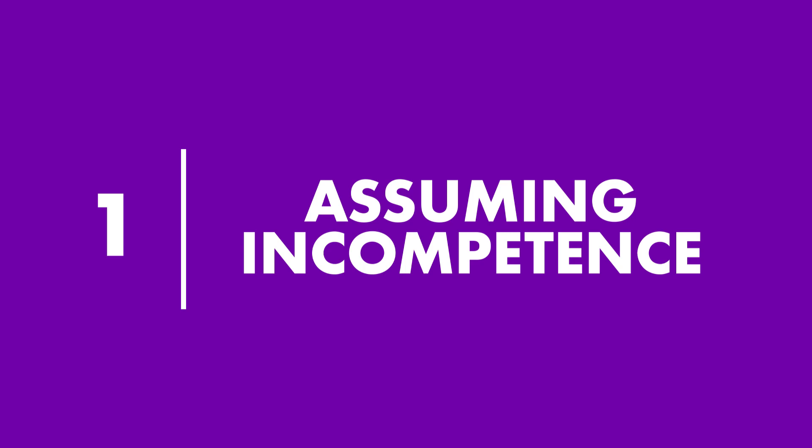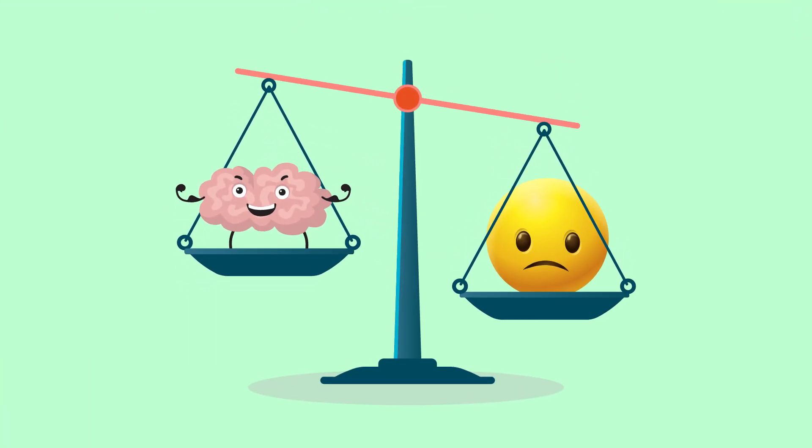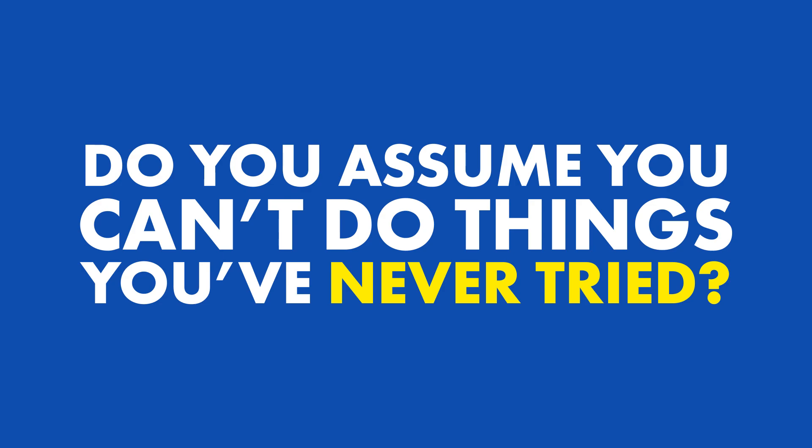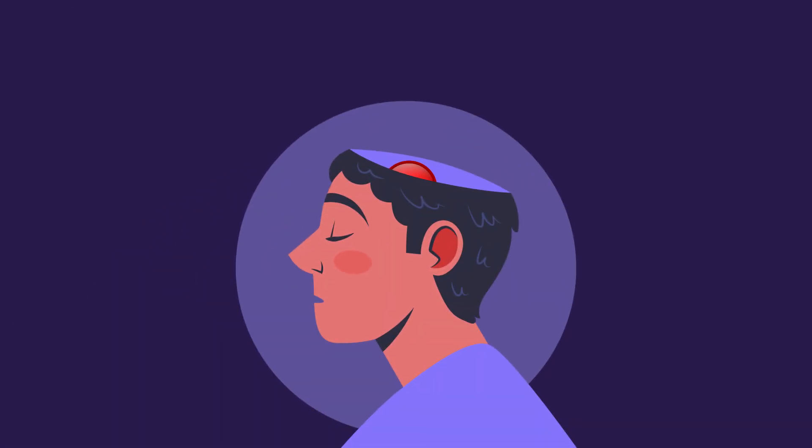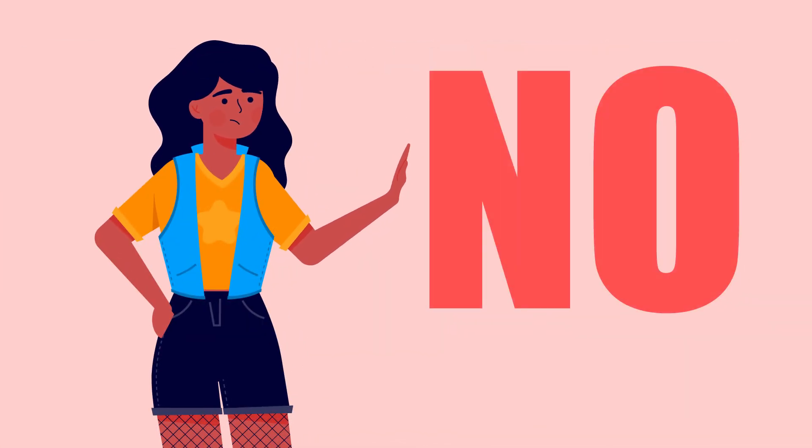Number 1: Assuming Incompetence. How well do you know your strengths and weaknesses? Do you assume you can't do things you've never tried? Many people maintain negative expectations toward unfamiliar activities. Instead of giving themselves the benefit of the doubt, you assume you're going to fail. You assume every difficult problem is out of your league, but that's rarely the case.